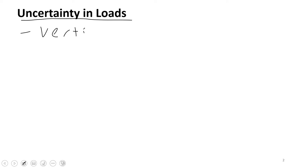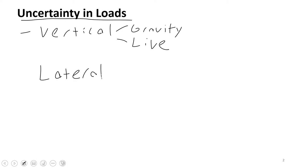First, let's look at uncertainty in loads, and the types of loads we need to design our structures to resist. We have vertical loads — things like gravity and live load — and then lateral loads like wind and seismic. There are many other loads as well, things like rain load, snow load, and some very rare and specialized loadings like tsunami, blast, or fire.